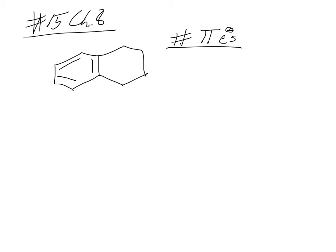How many electrons are in the pi system here? Six. We count one, two, three, four, five, six — so six pi electrons. Then the question is: is it aromatic, non-aromatic, or anti-aromatic?